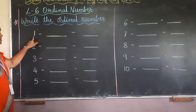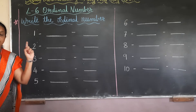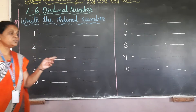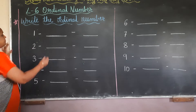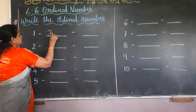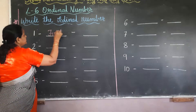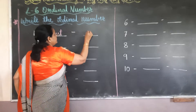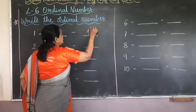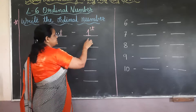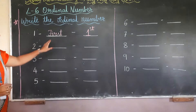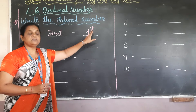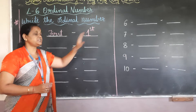We will say we got the 1st place. So we will first write the spelling of 1st — F, I, R, S, T — first. And in the short form, we write 1 and ST, meaning we got the 1st position.